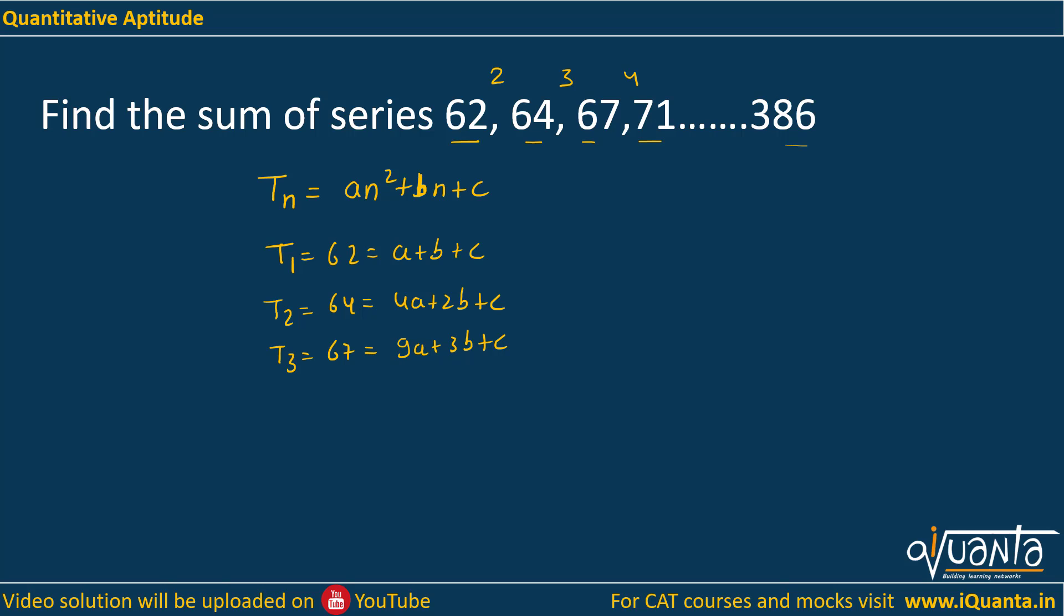Now I have three equations, three variables, so I can solve and find out value of ABC. I will subtract this equation from this, I will be getting 3A plus B equal to 2. From this equation I will subtract this, I will be getting 5A plus B equal to 3. If I subtract this equation from this, I will be getting 2A equal to 1, which gives me A equal to half.